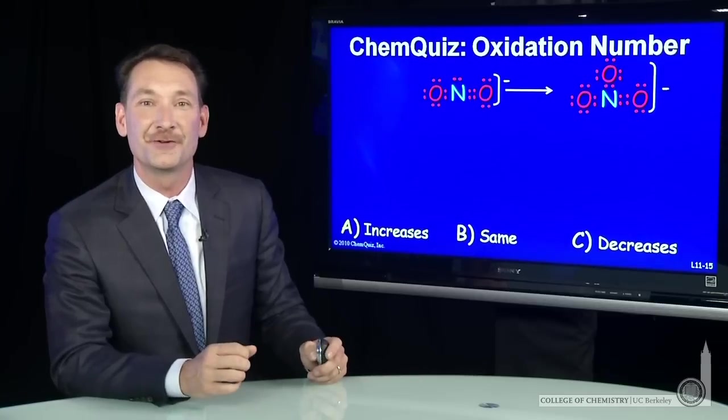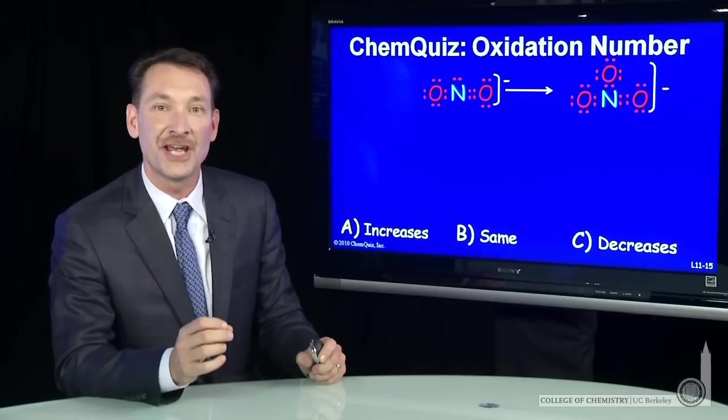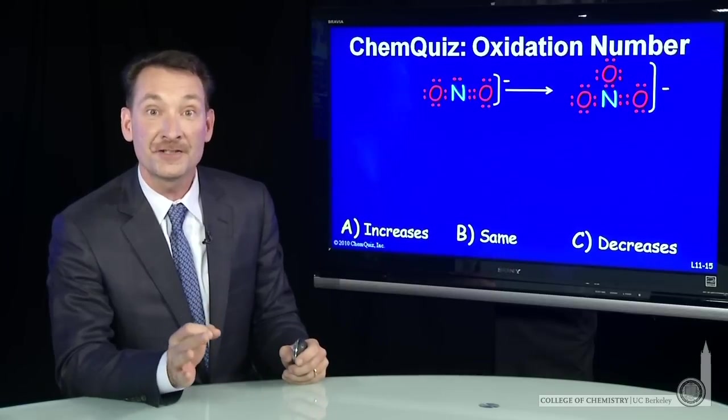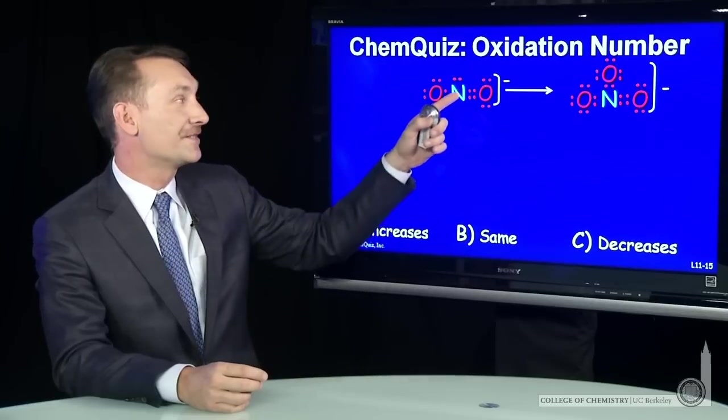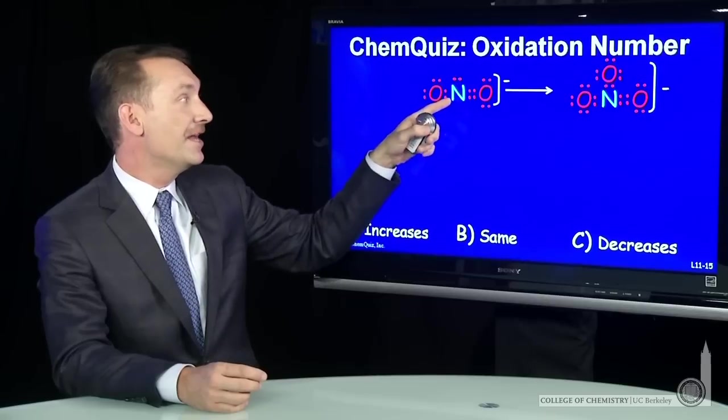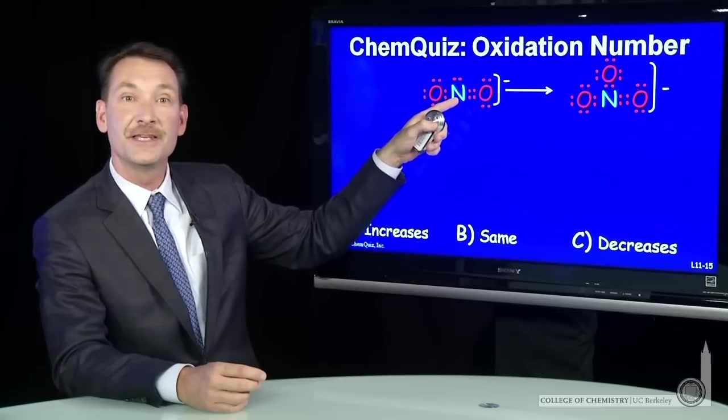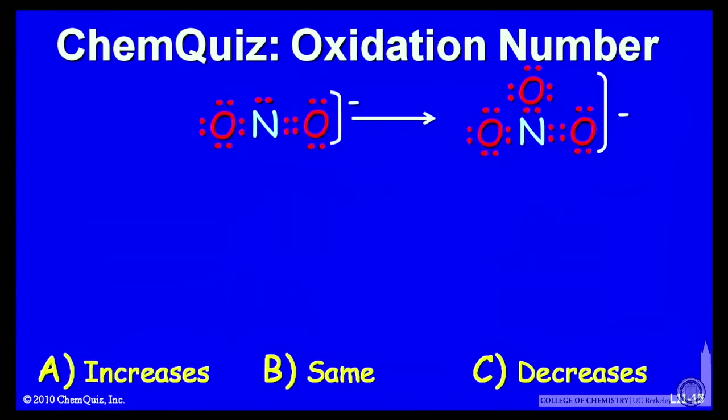We're looking at the oxidation reaction of NO2- to NO3- and determining the change in oxidation number of the nitrogen. The way to determine oxidation numbers is to draw the Lewis electron dot structure, then assign electrons to the more electronegative element, and then use the comparison of how many electrons the element has in the molecule versus how many electrons the element has in the atom. So let's do that.